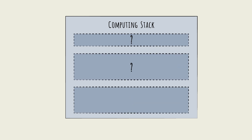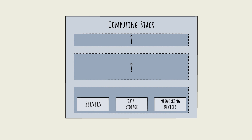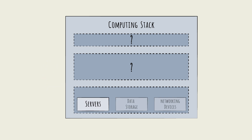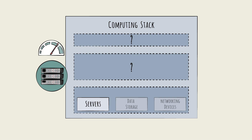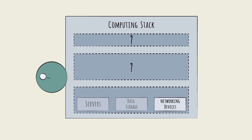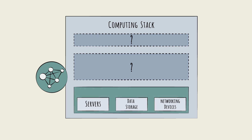At the bottom of the stack are the underlying physical hardware resources. Primarily, these include data storage devices, compute servers, and networking devices. Data storage devices are basically larger, fancier versions of a hard drive. Servers, or compute servers, are what carry out computing processes — the higher the server capacity, the greater the processing power. Networking devices are what create connectivity to other systems and devices via the Internet. Together, these bottom-of-the-stack resources are commonly called the infrastructure layer — they provide the foundation.